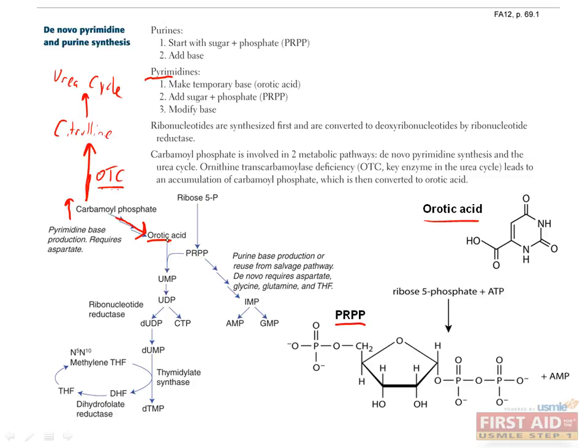Getting back to pyrimidine synthesis, orotic acid is combined with PRPP with the help of an enzyme called orotate phosphoribosyl transferase to produce OMP, or orotidine monophosphate. This is converted to UMP using the enzyme orotidine decarboxylase. I won't go through the details of how this is converted to UDP and CTP, but basically just add phosphates and make a functional group change.